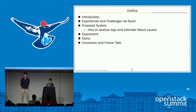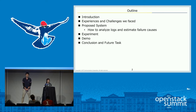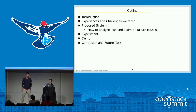This is the outline. Firstly, we introduce our company and our service quickly because it helps you understand the background of our challenges. Then we present experiences and challenges we faced. Next, we present the proposed system — how we analyze logs and how we estimate failure causes. Then we present experiments using production data, followed by a demo, and then we wrap up this presentation.